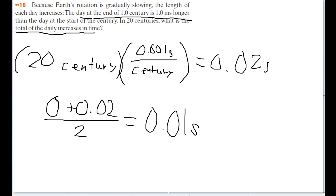Now, obviously, this is not actually literally true. It's not like tomorrow the day is going to be 0.01 seconds longer and stay that way until suddenly on the 20th century it becomes 0.02. It's not like that. But because we're assuming that the increase over those 20 centuries is uniform, this is a good approximation for the average per day.